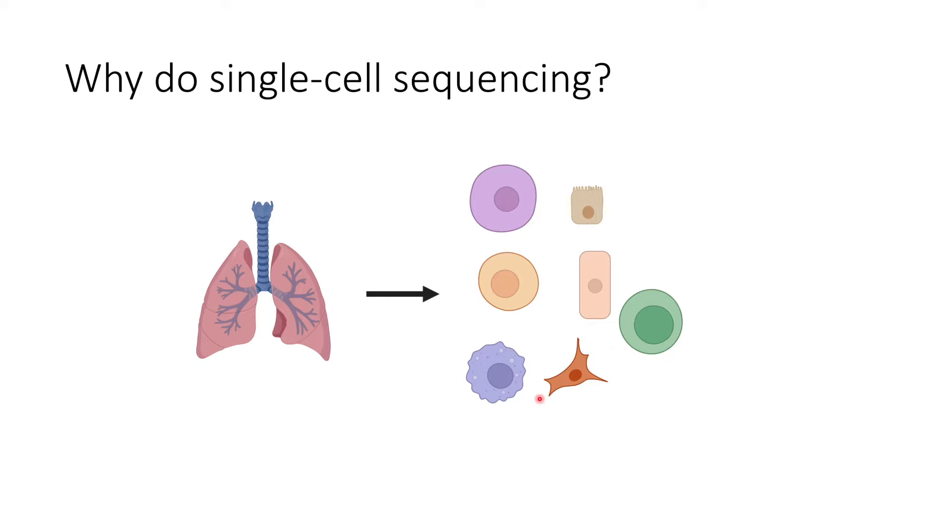The first thing you need to understand is why even do single-cell sequencing in the first place. The answer is pretty straightforward. You have multiple cell types within a single tissue.